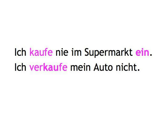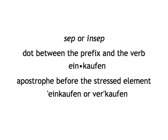But how do you know if a verb separates or not if you've never heard it? Well, some texts say 'sep' or 'insep' after the verb, while others — like ourselves — put a dot between the prefix and the verb: 'ein·kaufen.' Yet others put an apostrophe before the stressed element: 'einkaufen' or 'verkaufen.' Once you know this, always say the word out loud when you learn and use them, so that the pronunciation with the stressed or unstressed prefix becomes part of your oral memory.